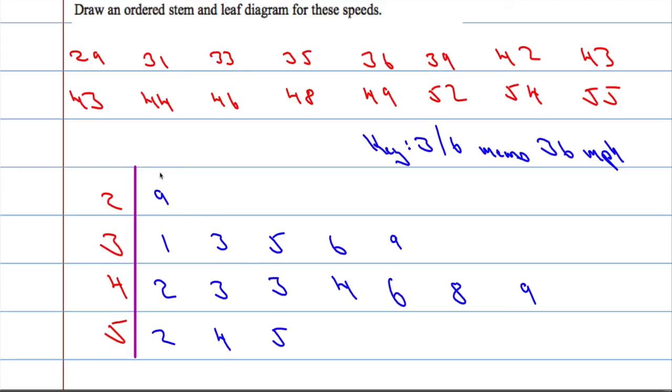And the last thing you're going to want to check is the number of leaves. Make sure that we've got 16 leaves. So 1, 2, 3, 4, 5, 6, 7, 8, 9, 10, 11, 12, 13, 14, 15, 16 leaves.